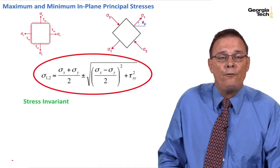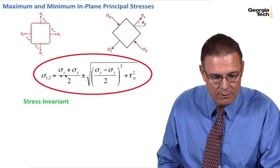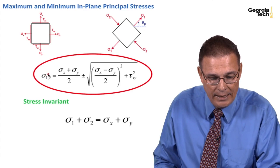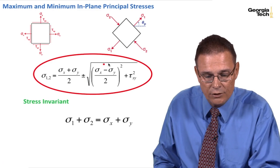Okay, here's our result again. We'll see from this that we can end up with what we call a stress invariant. If I add these two sigma sub 1's and sigma sub 2's together, I get sigma sub 1 plus sigma sub 2 on the left hand side.